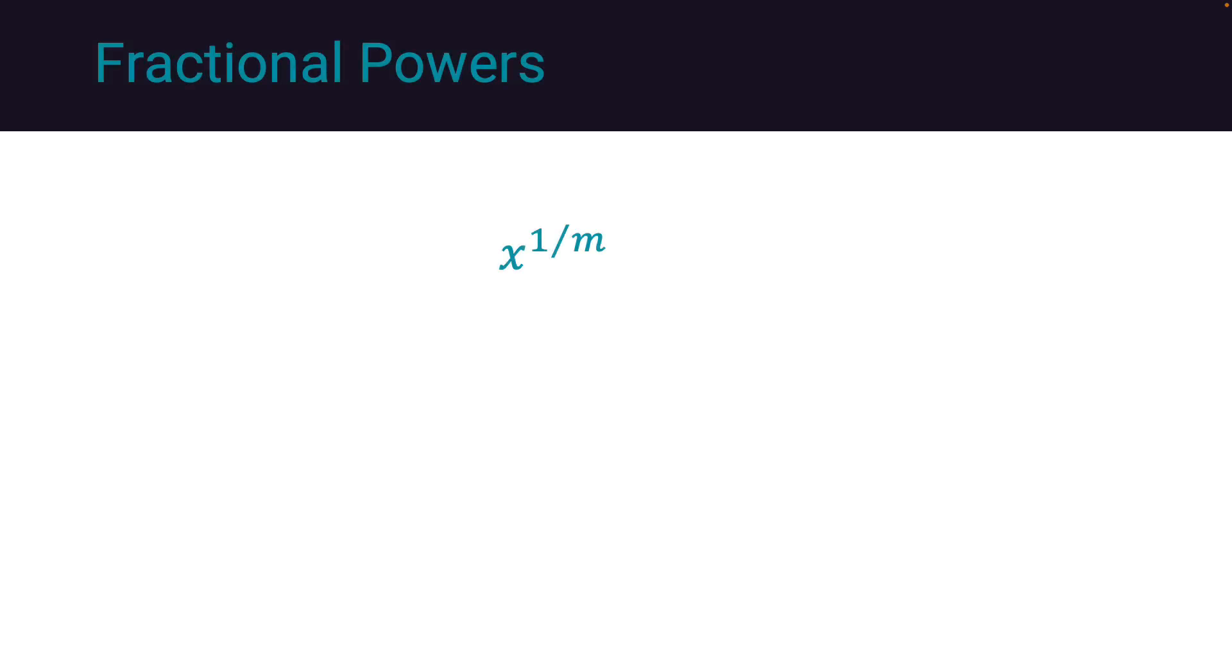Fractional powers are given by x to the power of 1 over m. Let's look at the case of x to the 1 half multiplied by x to the 1 half. This is equivalent to x to the power of 1 half plus 1 half, which is x to the 1 or simply x.